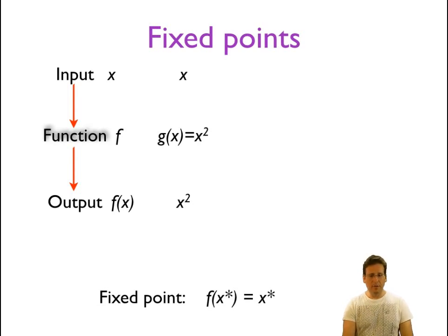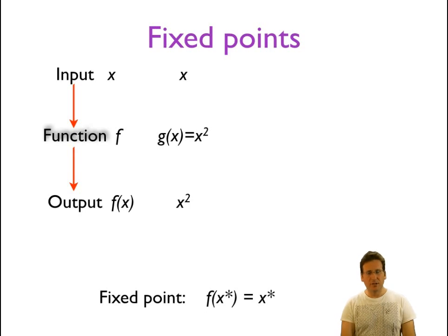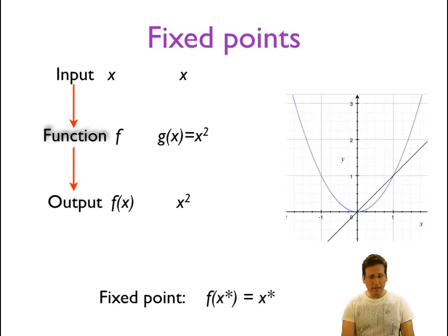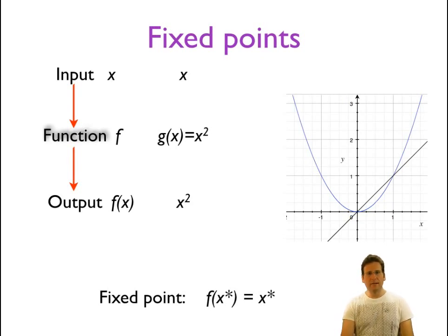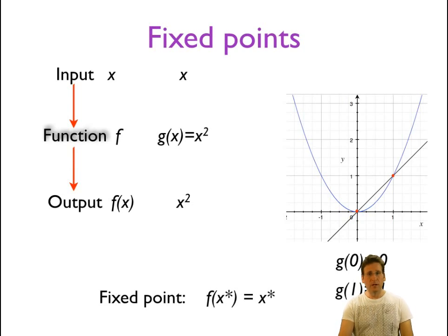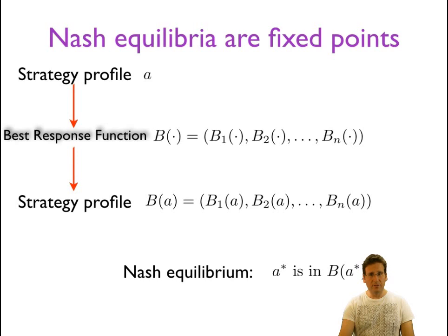Going back to the example f of x equals x squared, the input is x and the output is x squared. One way to find fixed points is to graph the function and look at where it intersects the line x equals y. Here's a graph of x squared and the line x equals y. At zero, the output is zero squared which is zero — that's a fixed point. At one, the output is one squared which is one — that's also a fixed point. So those are the two fixed points of that function.